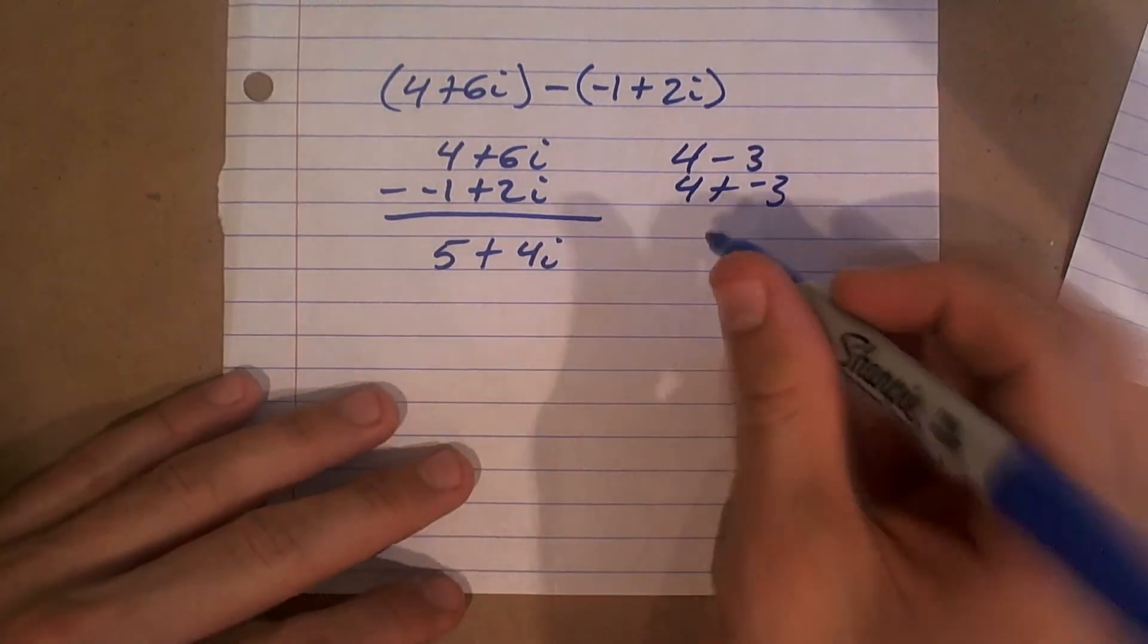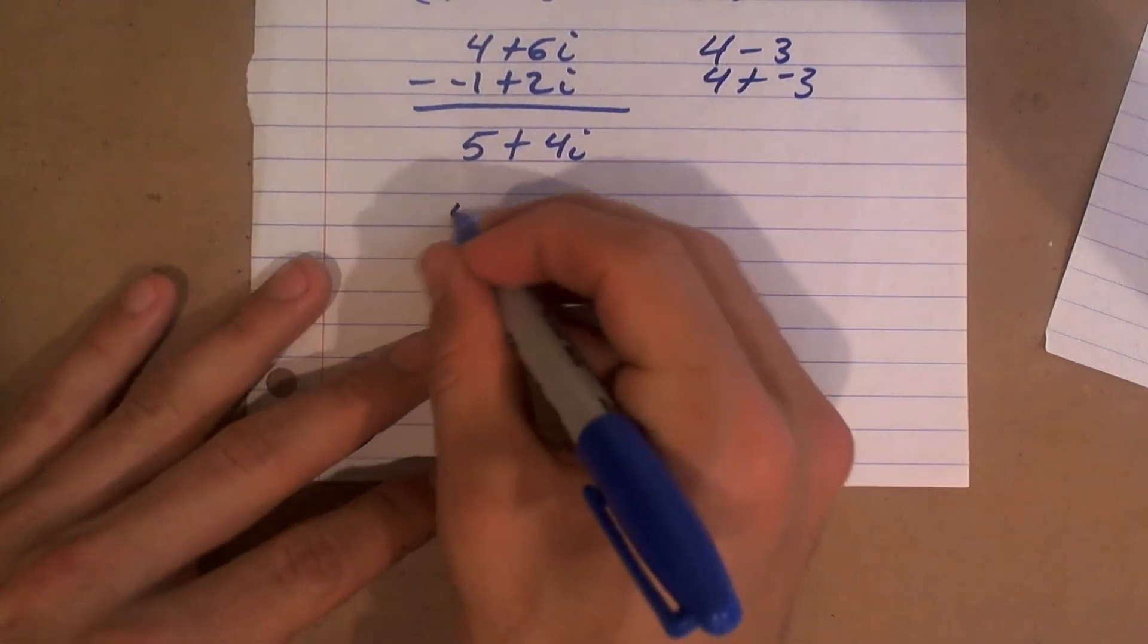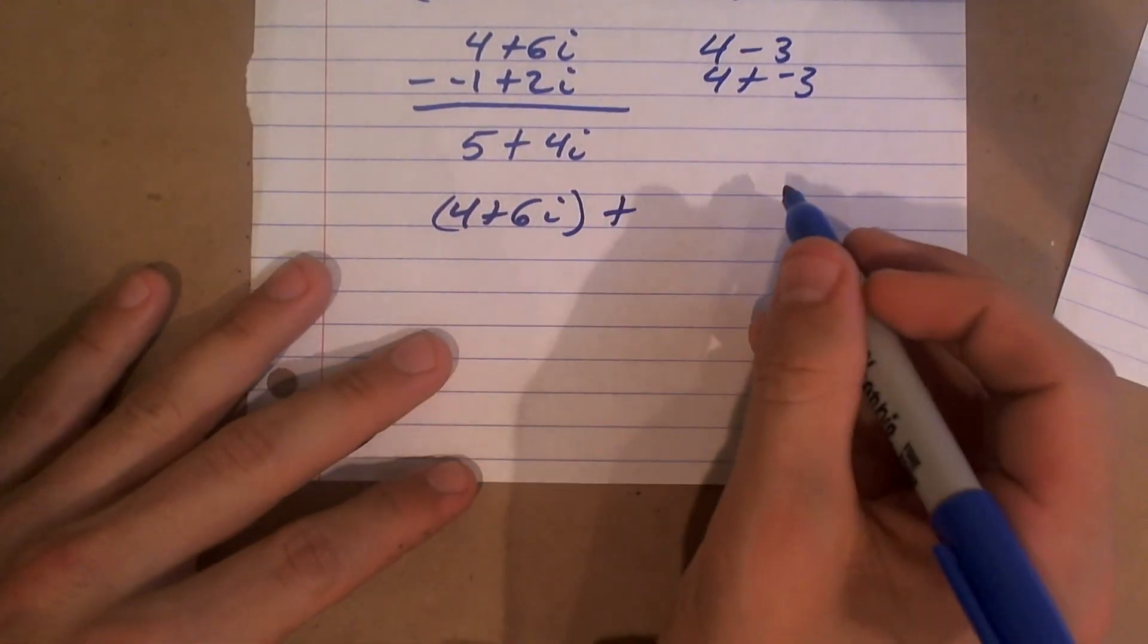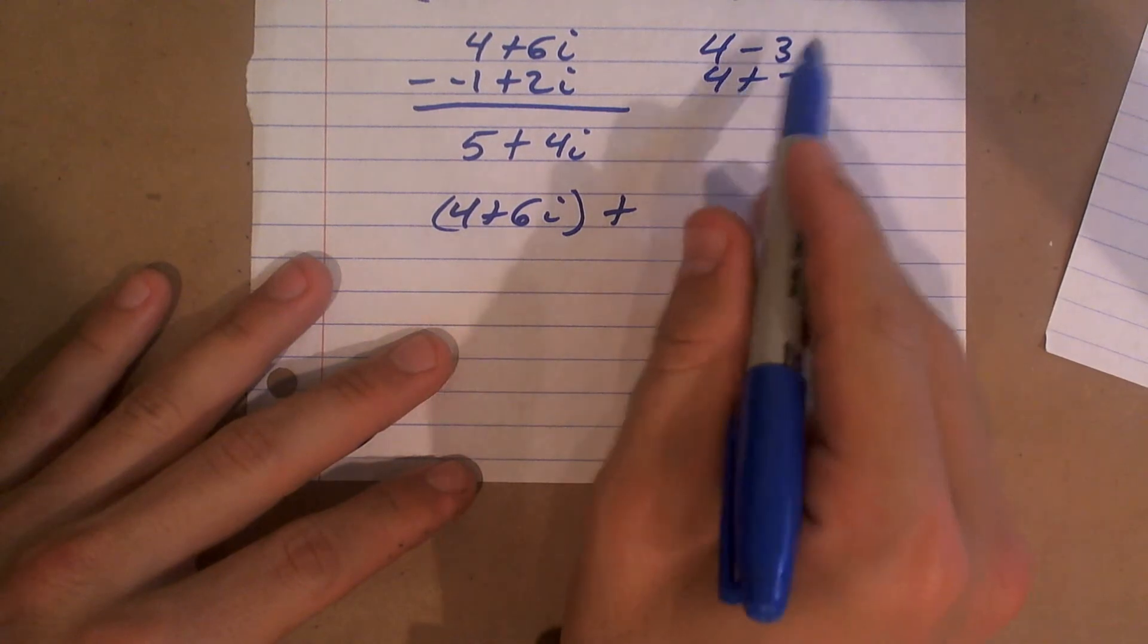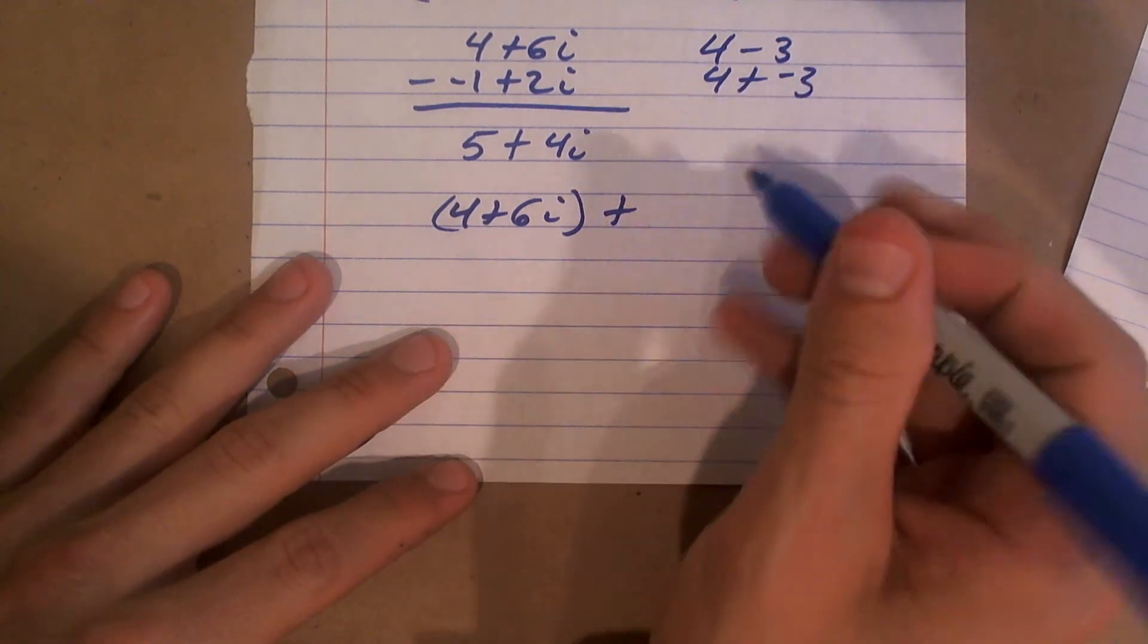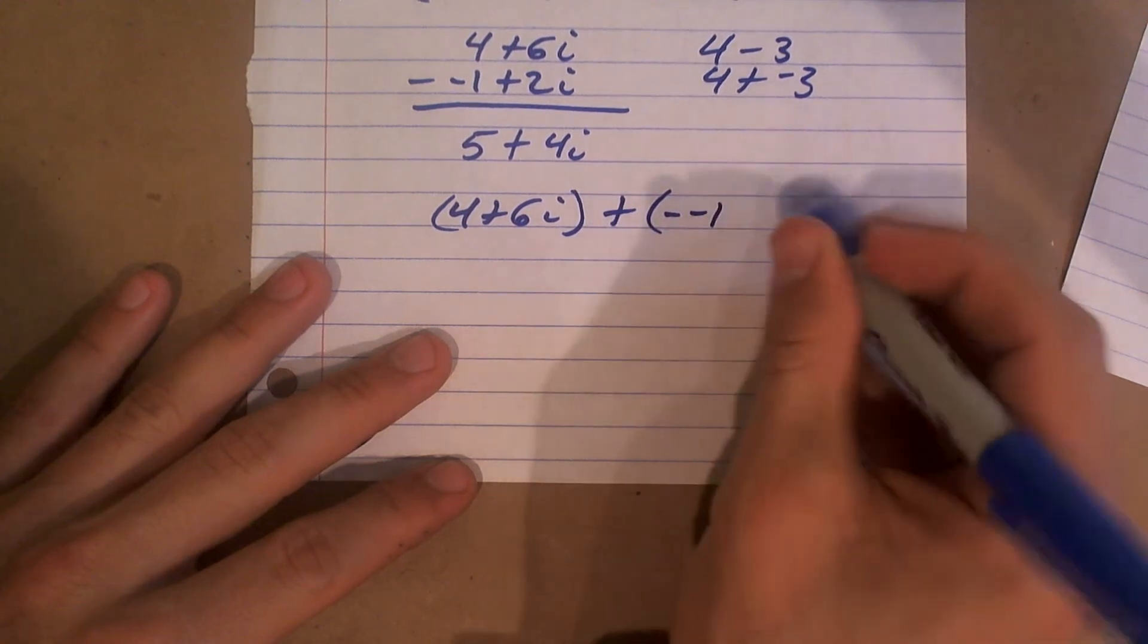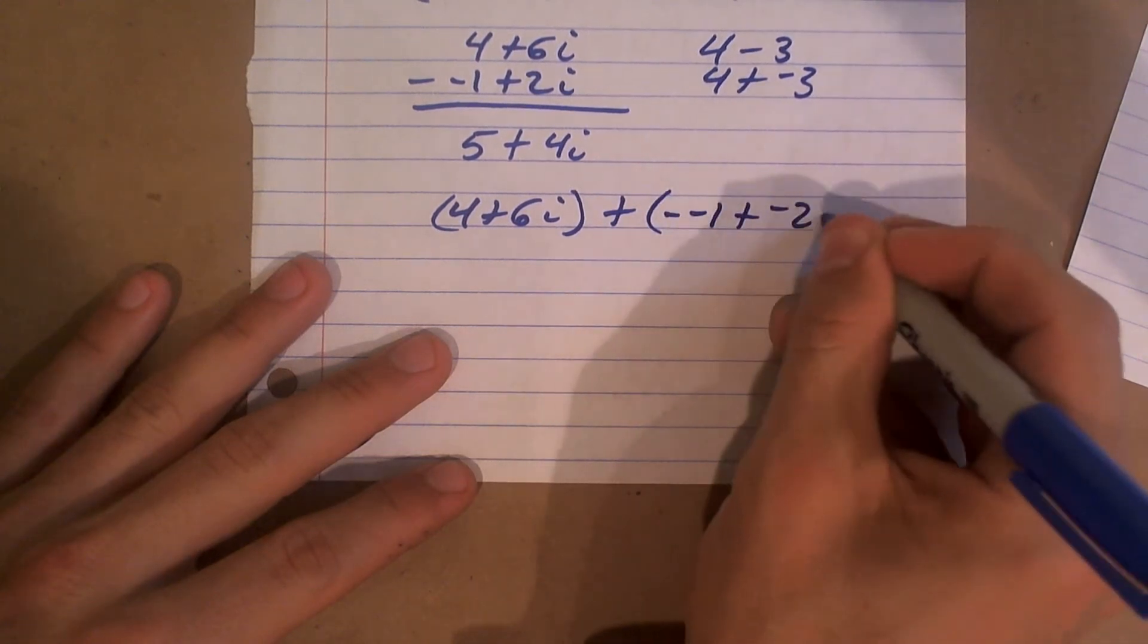I can do the same thing with this problem, and I actually prefer doing it this way. I can write this as an addition problem, but if I write this addition problem, that means I need to negate all of my other terms. So therefore, this becomes negative 1 plus negative 2i.